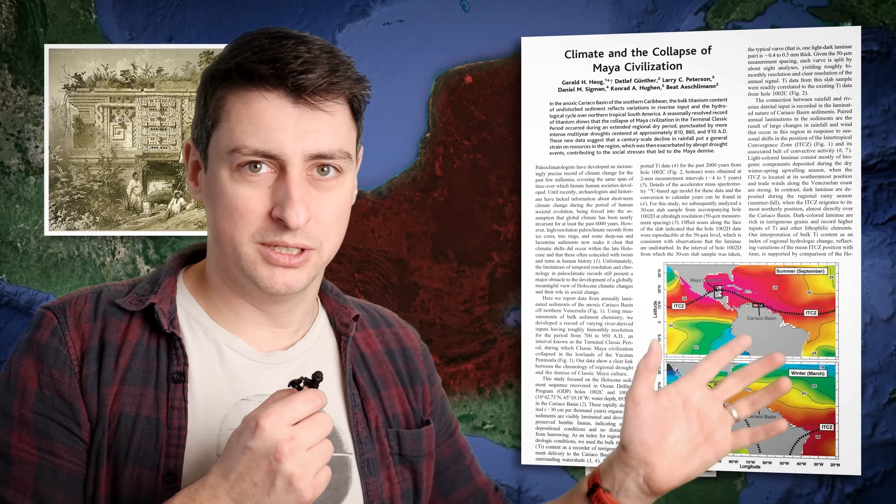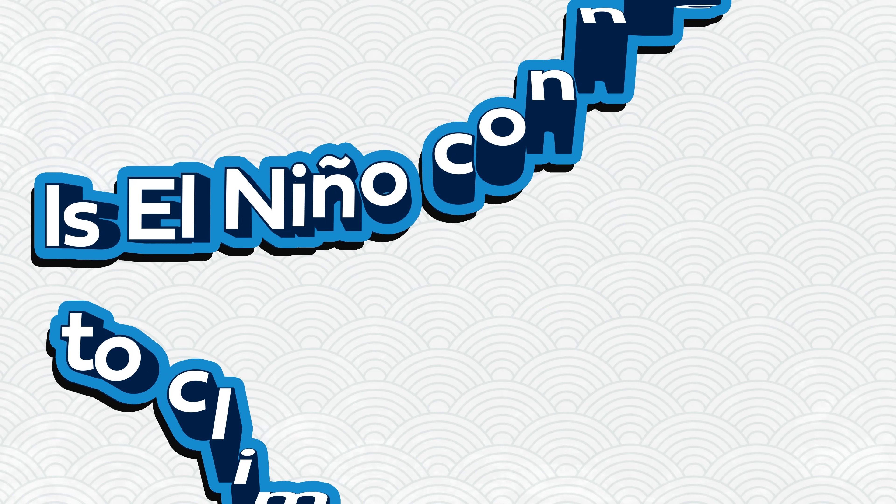I previously did a whole video on how El Niño might have caused the downfall of entire civilizations in the past — link up on the screen and down in the description. ENSO and the El Niño state within it are entirely natural phenomena. They would occur whether humans were here or not. But El Niño is still a really important topic within climate science.